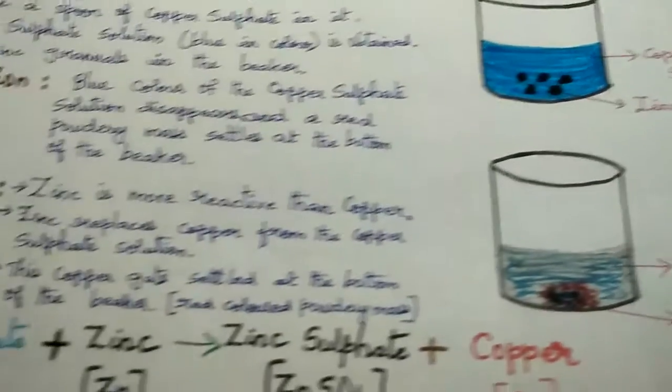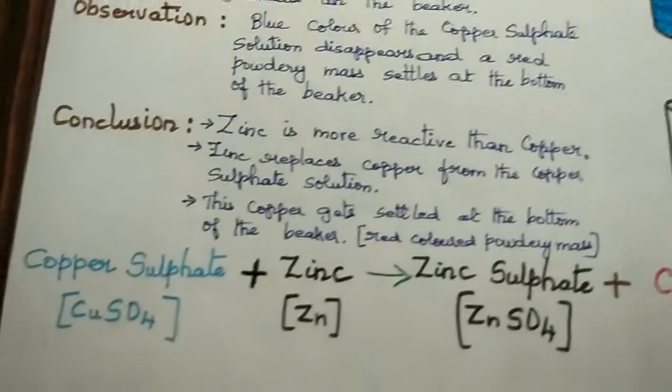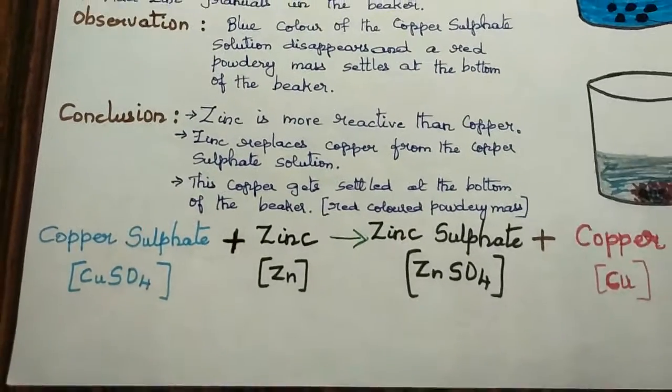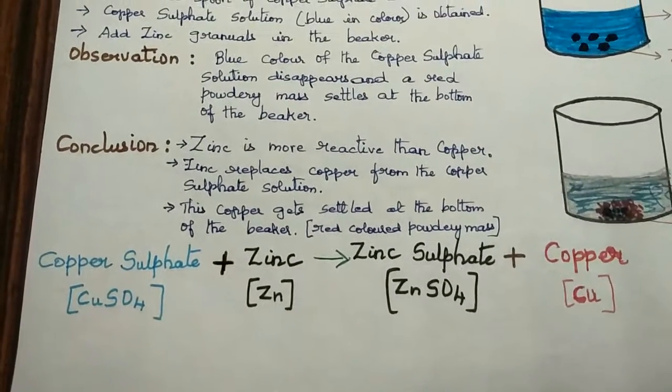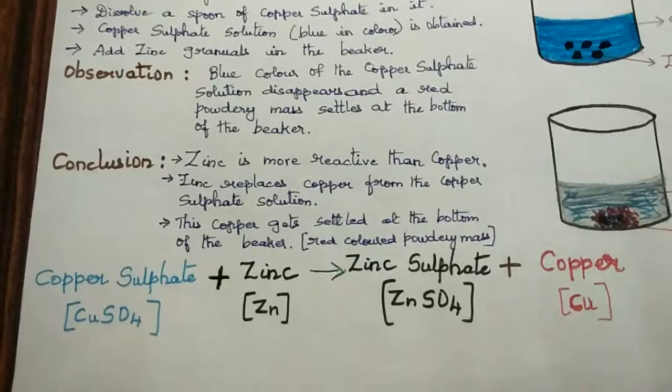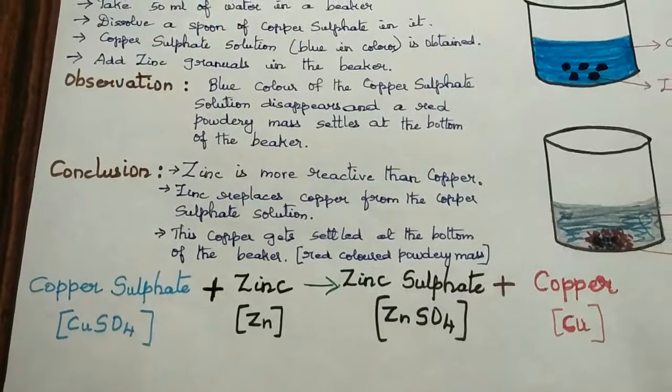Now let's study the chemical reaction. Copper sulfate plus zinc gives zinc sulfate plus copper.